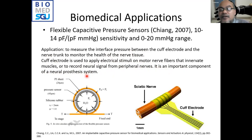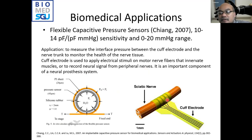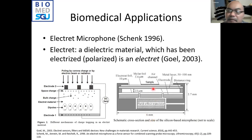This flexible capacitive pressure sensor is applied to measure the interface pressure between a cuff electrode and the nerve trunk, to monitor the health of nerve tissue. A cuff electrode applies electrical stimuli on motor nerve fibers innervating muscles, or records neural signals from peripheral nerves — an important component of neural prosthesis systems used in rehabilitation devices. The pressure between the cuff electrode and the nerve trunk must be controlled, as too much pressure will hurt the subject. The flexible sensor can wrap around the sciatic nerve, making this an ingenious design for implantable biomedical applications.